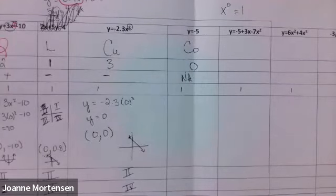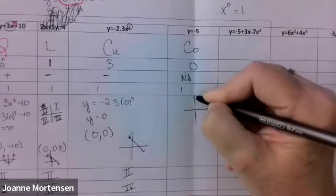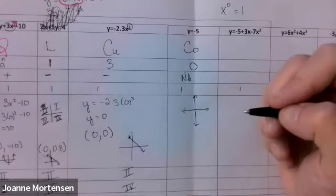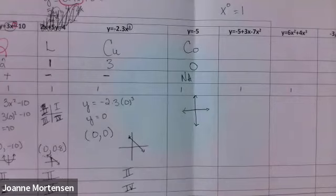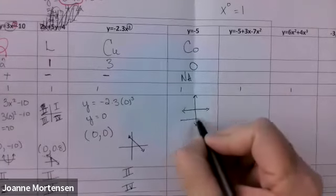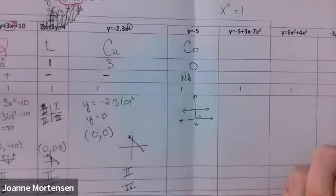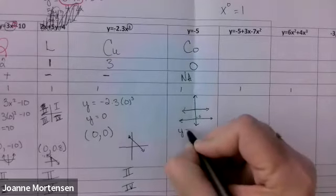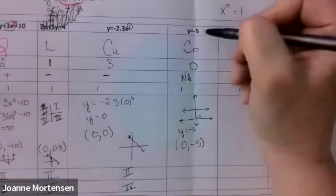One y-intercept. What does y equals negative five look like? It's a straight horizontal line going through negative five — five down. So the y-intercept: y equals negative five, so the coordinates are (0, negative 5). I overthought it — it tells me right there what y is.